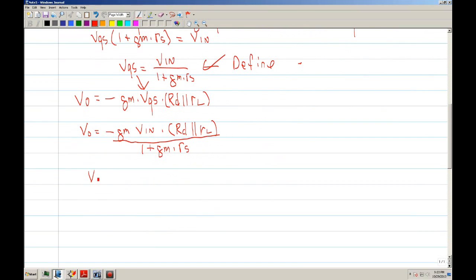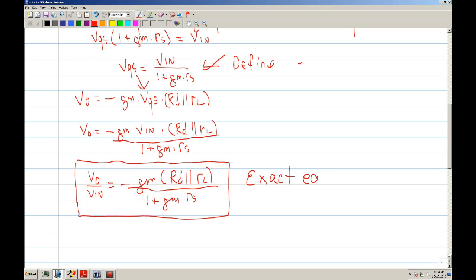Bring this VN to the other side, to the left side, so you have Vout over VN equals negative GM times RD parallel RL divided by one plus GM RS. So this should be the exact equation.